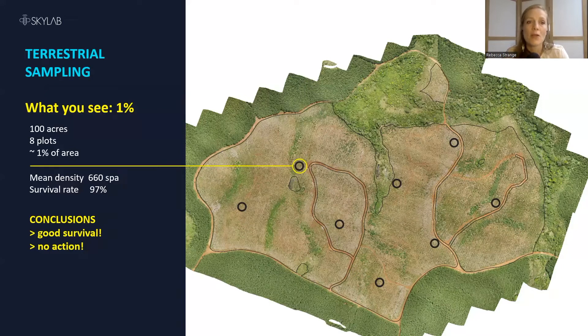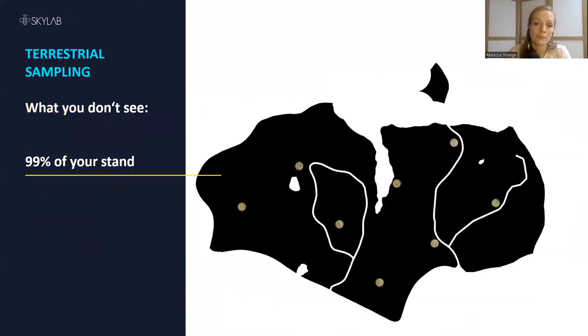However, those sampling plots represent only 1% of the total area. And what you don't see is the remaining 99%, which is effectively a black box.